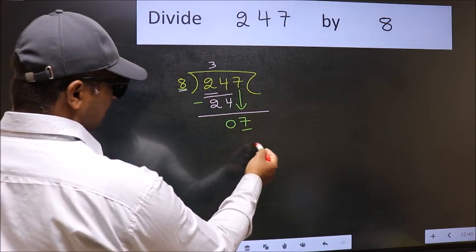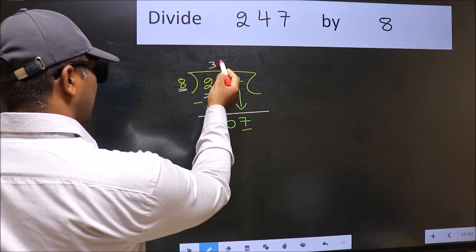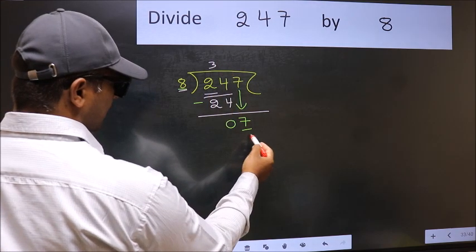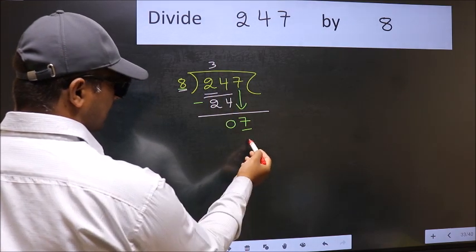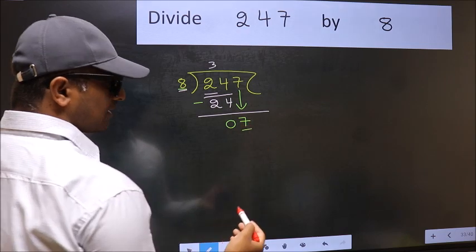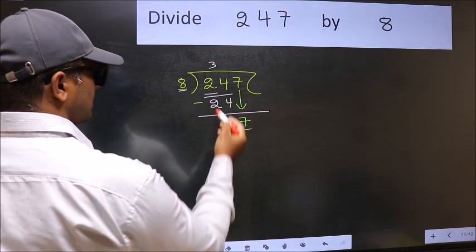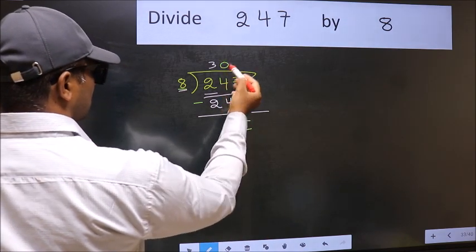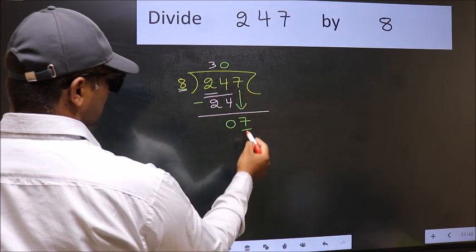Instead, what you should think of doing is: which number should we take here? If I take one, we will get eight, but eight is larger than seven. So what we should do is we should take zero. So eight into zero equals zero.